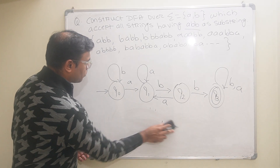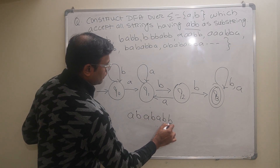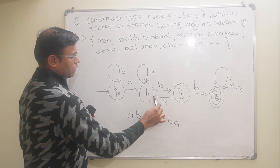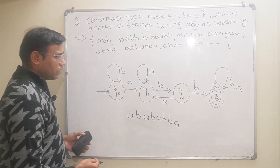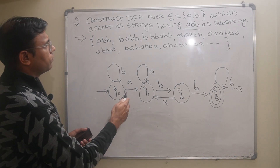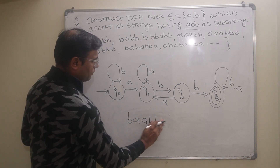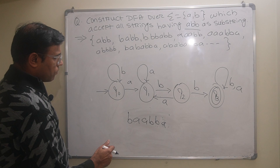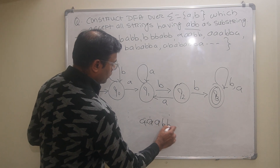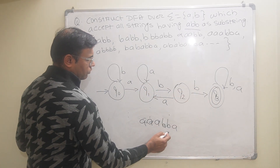The next possibility is ABABABB — tracing A, B, A, B, A, B, B — the DFA accepts this correctly. Then consider AAABBA with three A's: tracing A, A, A, B, B, A — the DFA accepts this also, since the loop of A on Q1 handles multiple A's before the B pattern.